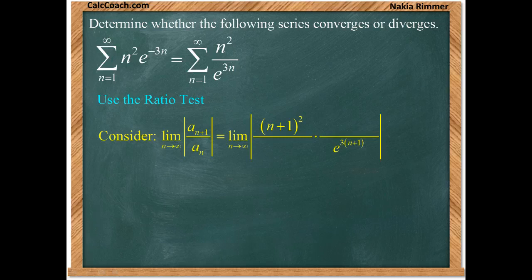On the part of the fraction that this term is in, replace n by n plus 1. So in the numerator, n plus 1 squared. In the denominator, e to the 3 quantity n plus 1. In the gaps, you put the terms from the original series. So n squared underneath, and e to the 3n up top.